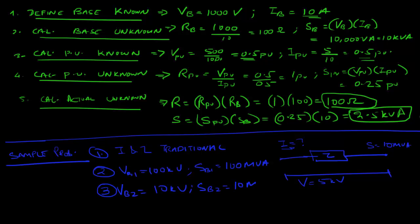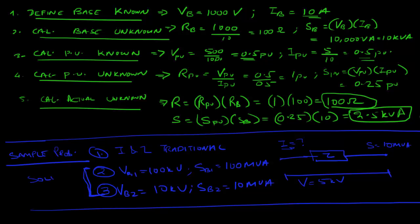Also solve using a second set of bases: V_base = 10 kV and S_base = 10 MVA. Give me your answers in the comment section. The key thing to be careful about is units — the given values are in kV and MVA, so be clear about whether your final current comes out in amps or kiloamps.